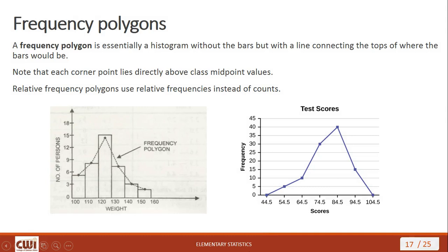Frequency polygons are essentially histograms without the bars. Instead, lines connect what would be the tops of the bars. You take the center point of the top of each bar and connect them with a line, making your frequency polygon. You can also make a relative frequency polygon using relative frequency instead of counts — you get the same basic shape either way.